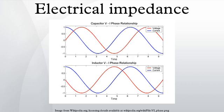Generalized s-plane impedance: impedance defined in terms of jω can strictly only be applied to circuits which are driven with a steady-state AC signal. The concept of impedance can be extended to a circuit energized with any arbitrary signal by using complex frequency instead of jω. Complex frequency is given the symbol s and is, in general, a complex number. Signals are expressed in terms of complex frequency by taking the Laplace transform of the time-domain expression of the signal. For a DC circuit this simplifies to s = 0; for a steady-state sinusoidal AC signal, s = jω.